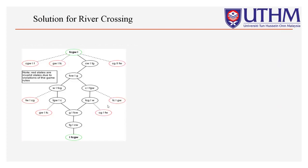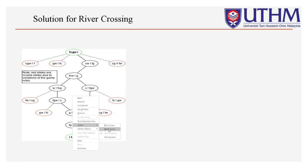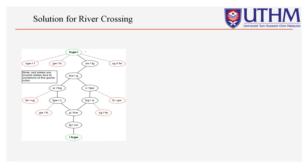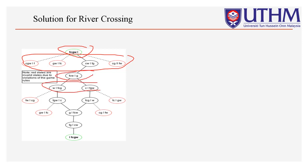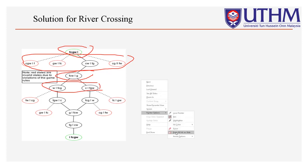This is the solution for our river crossing. From this river crossing, as you can see, there are different kinds of layers: the initial step, then the first step, second step, third step, and so forth. These represent the layers of the solution.